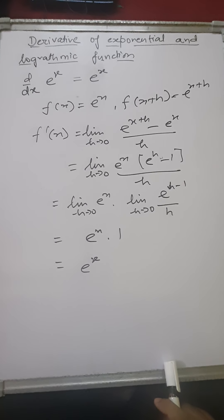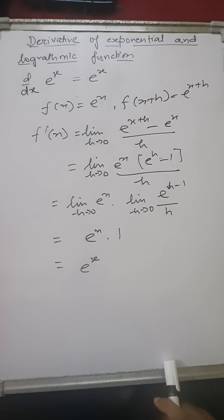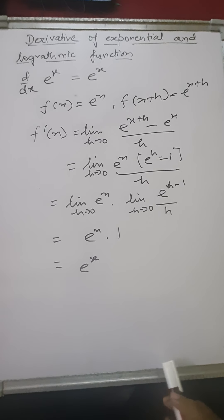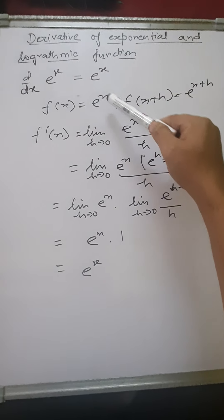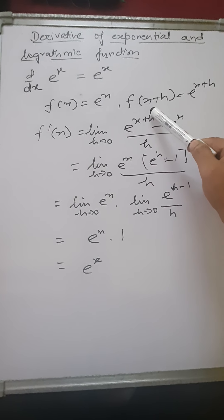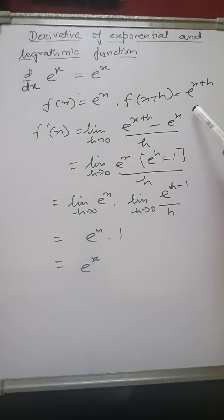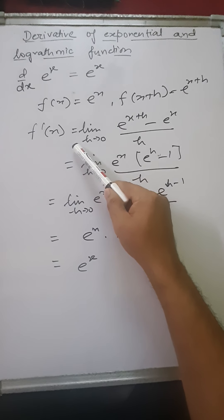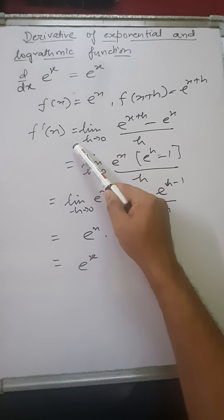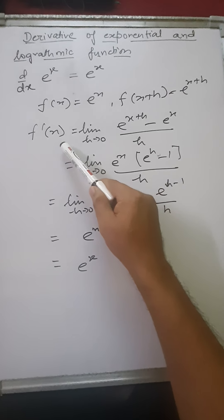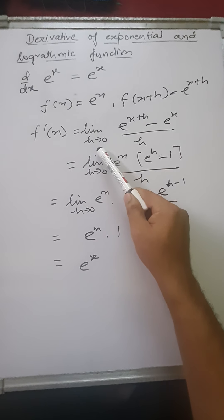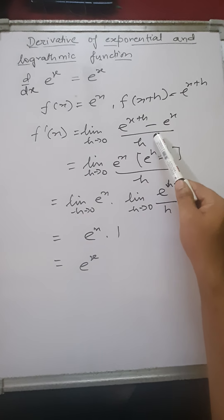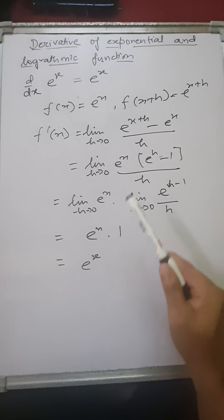Let's see how we can calculate the derivative of the exponential function. Say f(x) equals e to the power x, then f(x+h) will be e to the power x plus h. Now applying the first principle: f'(x) equals limit h tends to 0 of e to the power x plus h minus e to the power x, all upon h.